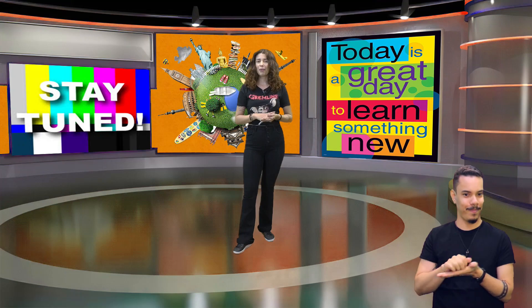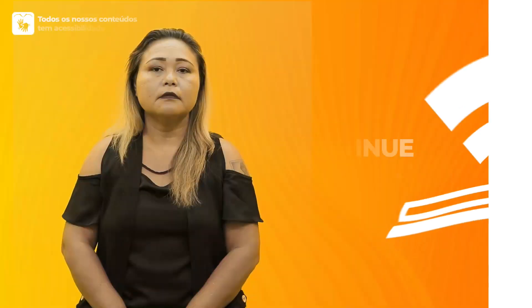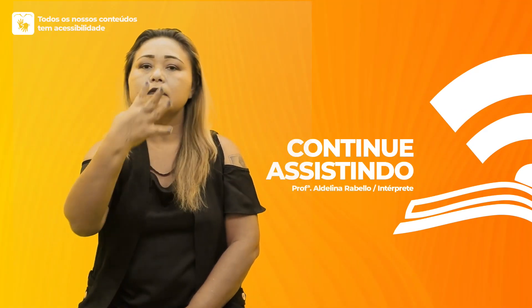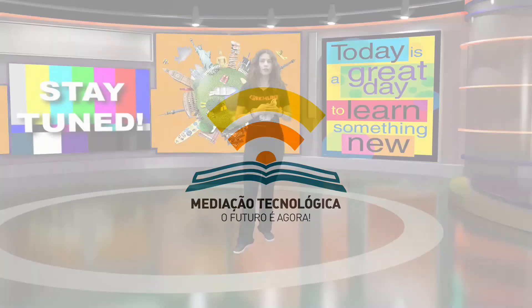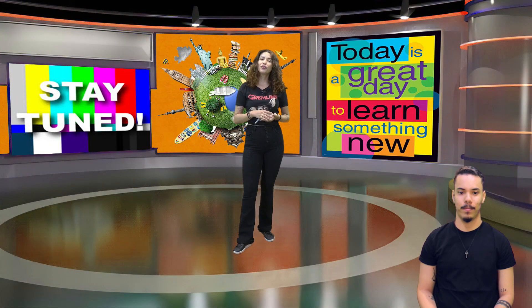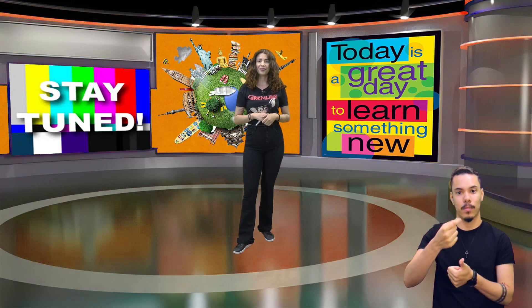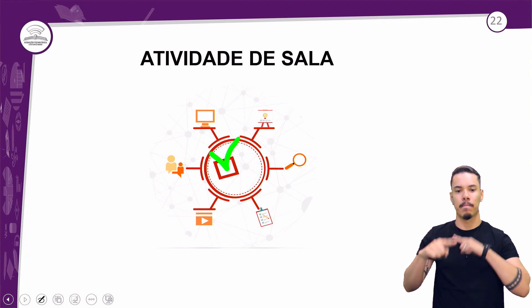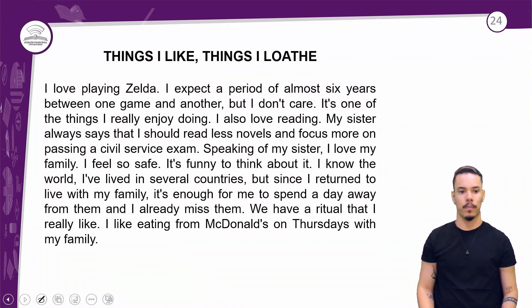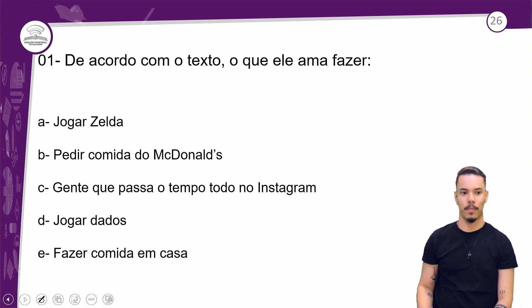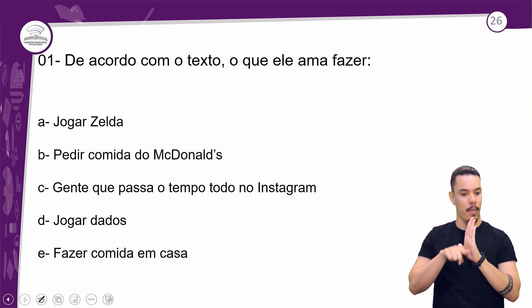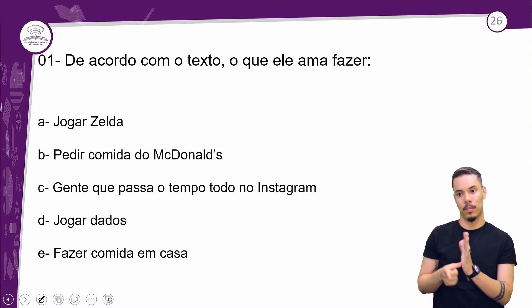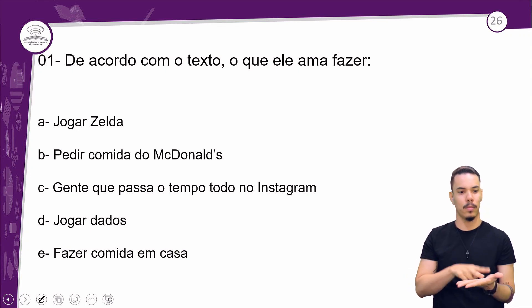Vamos ficar com a atividade? Be right back. I'm back, estou de volta. And let's correct. Let's go. Atividade de sala, o momento de tirar as suas questions. Temos aí um texto e nós vamos ter algumas interpretações. Então, antes de a gente ir atrás das interpretações, vamos fazer a leitura do texto.